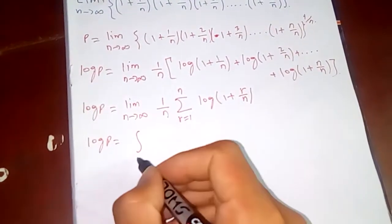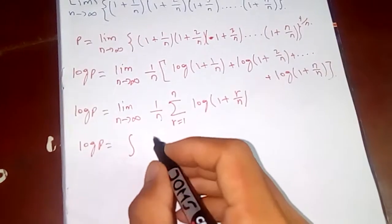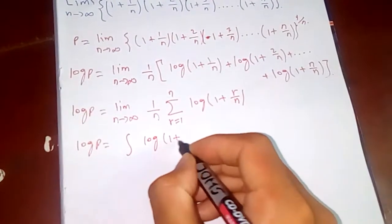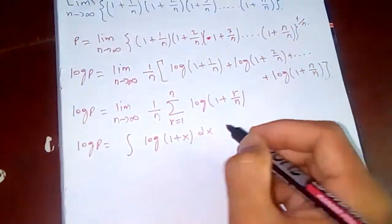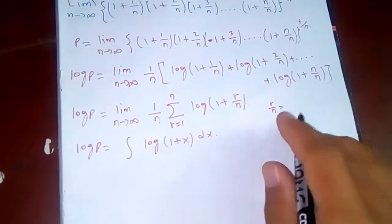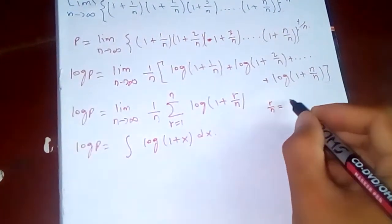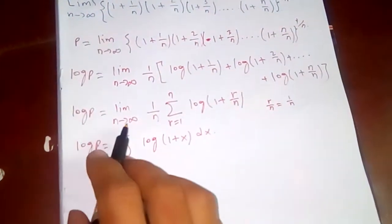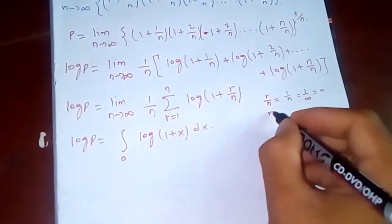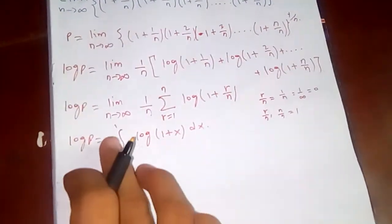Now we are going to replace this limit as n tends to infinity of this summation by a definite integral. We replace r by n with x, and one by n becomes dx. When r equals one, r by n equals one by n, which tends to zero as n goes to infinity. When r equals n, r by n equals n by n which is one. So our limits of integration are from zero to one.